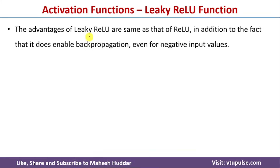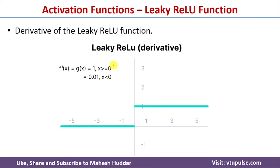The advantages of Leaky ReLU are the same as ReLU, with the addition that it solves the dying ReLU problem. The derivative of Leaky ReLU is f'(x) = 1 for x ≥ 0, similar to ReLU, but for x < 0 it is 0.01 — a very small number rather than 0. Because we have this small non-zero gradient, the weights and biases will be updated, ensuring neurons will not be in a dead state and will be activated in future.